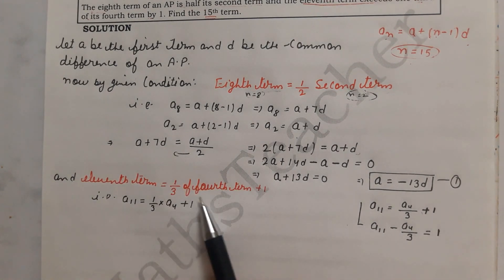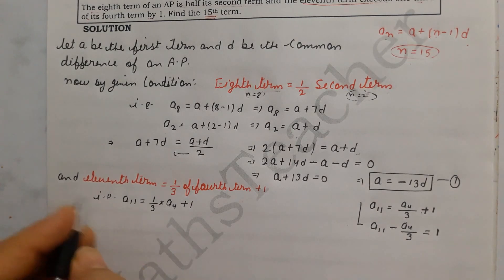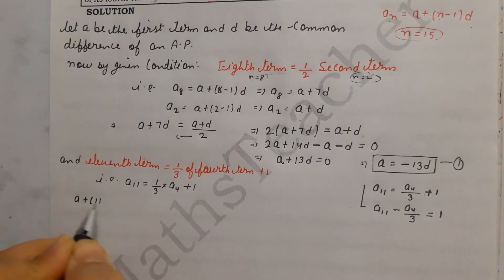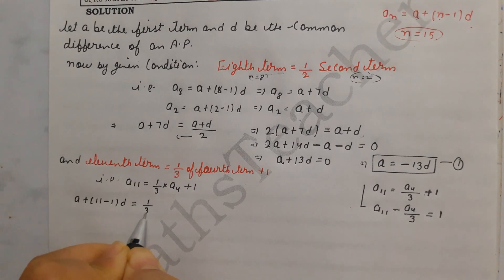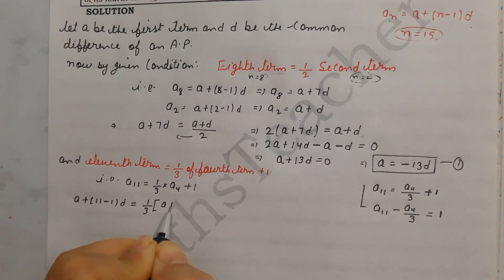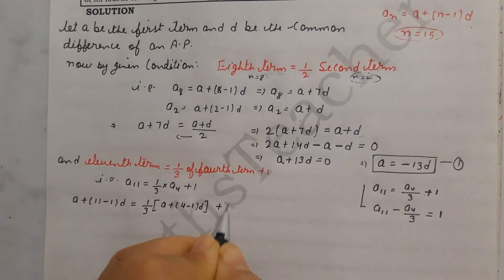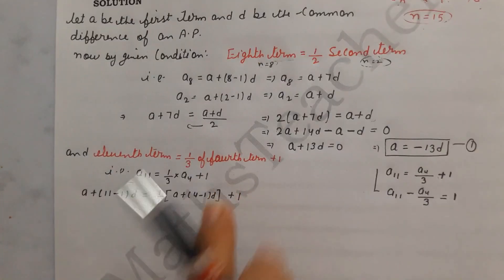So the equation is: a_11 = (1/3) × a_4 + 1. For a_11, put n = 11: a + (11−1)d = a + 10d. For a_4, put n = 4: a + (4−1)d = a + 3d. So the equation becomes: a + 10d = (1/3)(a + 3d) + 1.